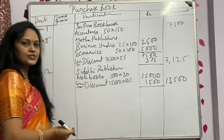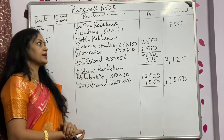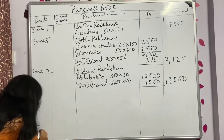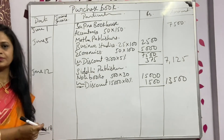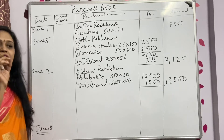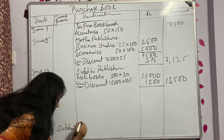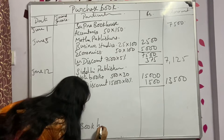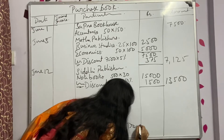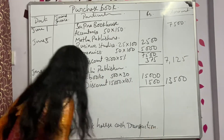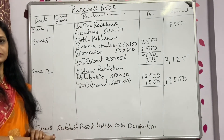June 18th: there is a cash transaction. We bought 10 packs of pens from Subhash Book House, purchased for cash. Since it is a cash transaction, we need not make any entry in the purchase book.